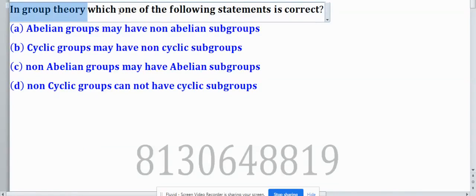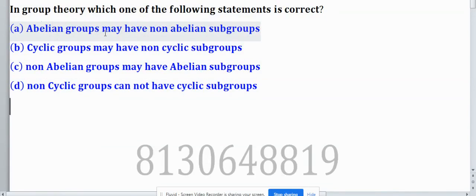In group theory, which one of the following statements is correct? Abelian groups may have non-abelian subgroups. If a subgroup comes from an abelian group, then the group and subgroup have the same binary operation. Also, elements are coming from the abelian group, so they will form commutative property. That's why non-abelian subgroups don't exist.